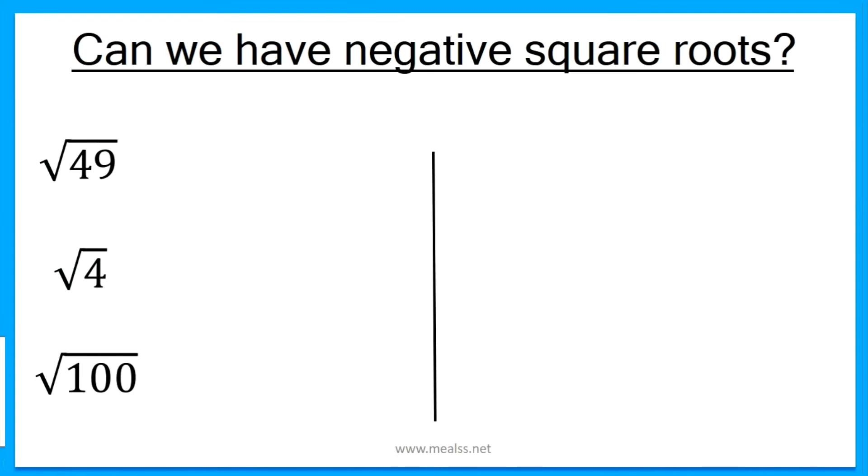Can we have negative square roots? The answer for this question is yes. So we know that the square root of 49 is 7, because 7 squared equals 49. But also we could have negative 7 times negative 7, which also gives us 49, because two negative numbers when multiplied together give us an answer which is positive.